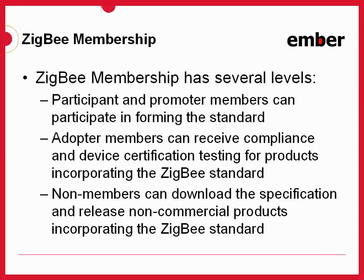In addition to the promoter level members, there are also two other classes of ZigBee Alliance members: participants and adopters. Participants, along with the promoters, have the ability to participate in regular conference calls and design meetings and vote on potential changes to the specification. Adopter members only have the right to view in-process documents and implement specifications without being able to influence their development.